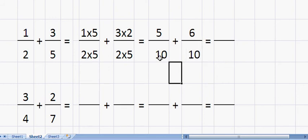Once the bottom parts of two fractions are the same, we can just add the two top numbers, so five and six gives us eleven, and the ten on the bottom remains the same.